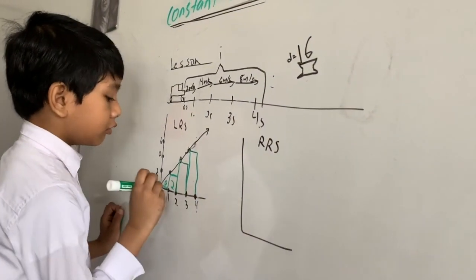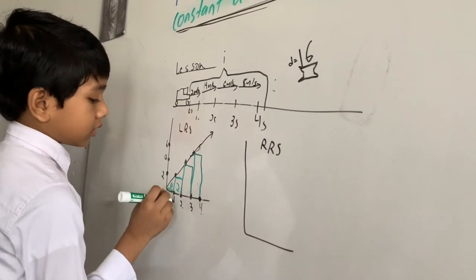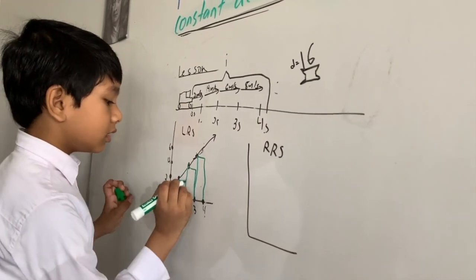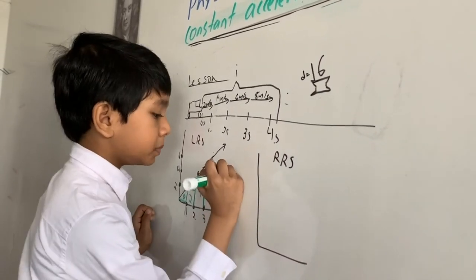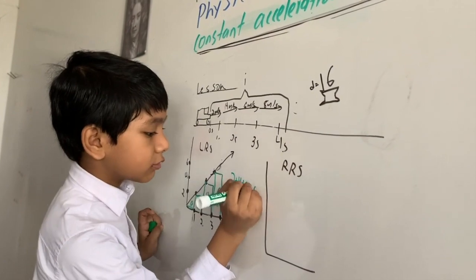Then this is 2, a base of 1, a height of 2, then a base of 1, a height of 4, a base of 1, a height of 6. So 2 plus 4 plus 6 is 12.